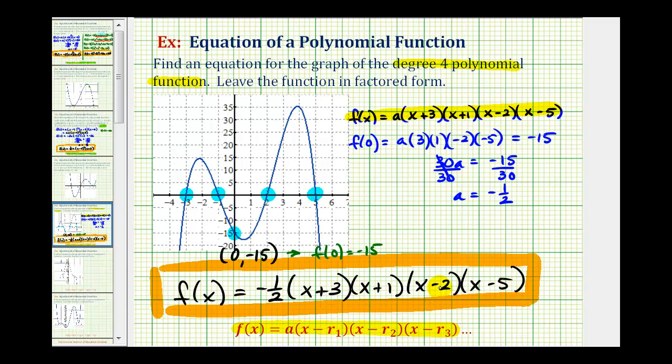Notice, if we multiply this out, the leading coefficient would be negative, and it's a degree four polynomial function. So, notice as we move to the left and right, the function is going down, approaching negative infinity in both directions, which is what we expect with an even degree and a negative leading coefficient.